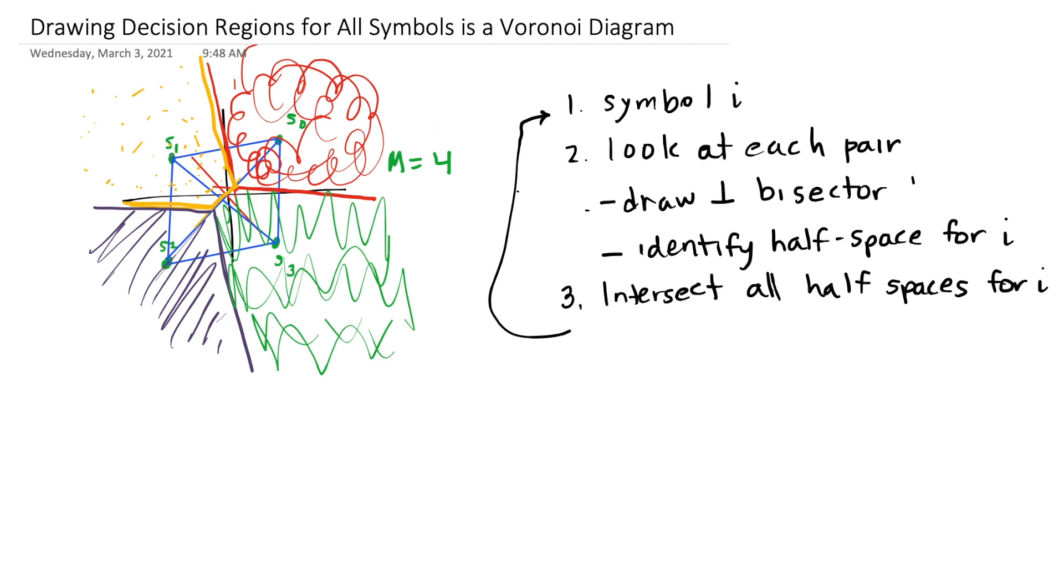So for example, S1 and S3 have a very similar shape of their decision region, and S0 and S2 have a very similar shape of their decision region based on the reasonable symmetry of what I drew on this page.